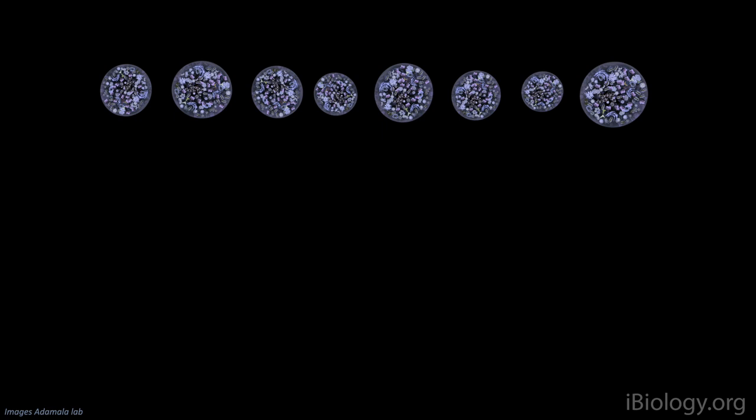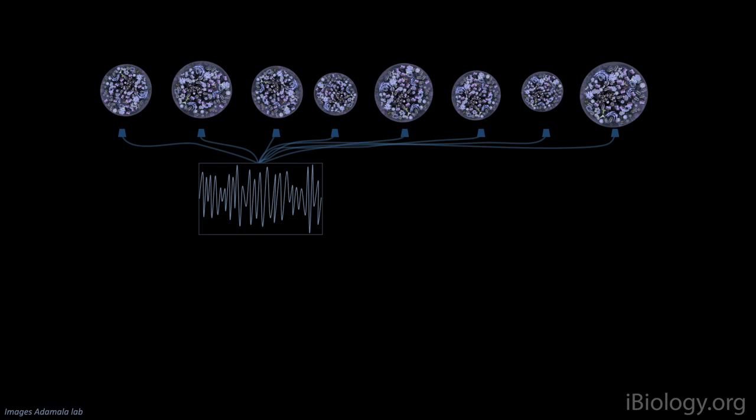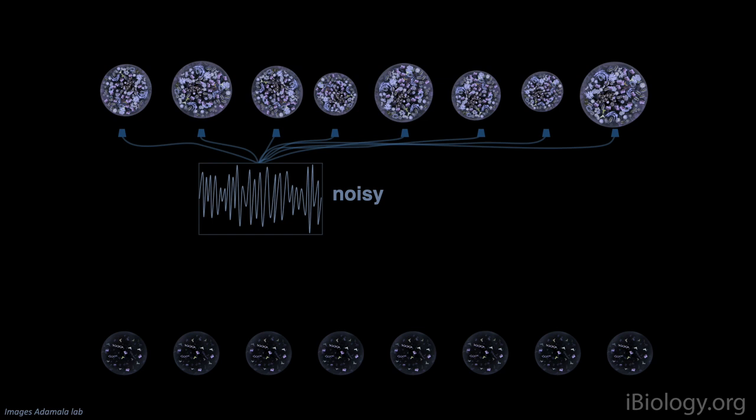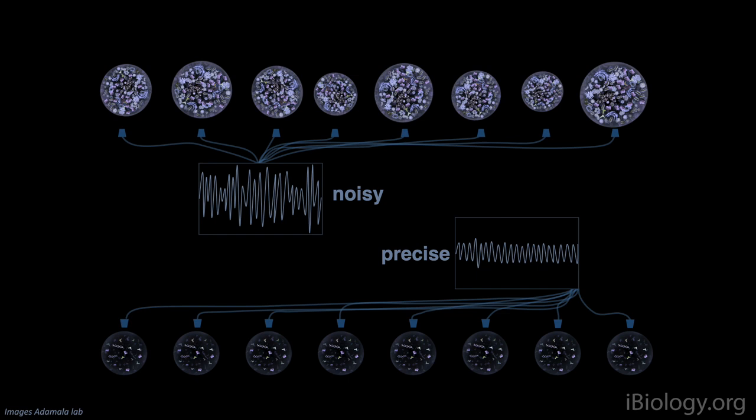A lot of biology research suffers from low reproducibility and from difficulty distinguishing signal from noise. This is mostly because no two natural cells are ever alike — even genetically identical cells will end up being just a little bit different from each other, with changes they accumulate during their lifetime. But all synthetic cells created together will be identical, so any measurement done on a synthetic cell is much more precise, making it easier to identify the signal we're looking for.